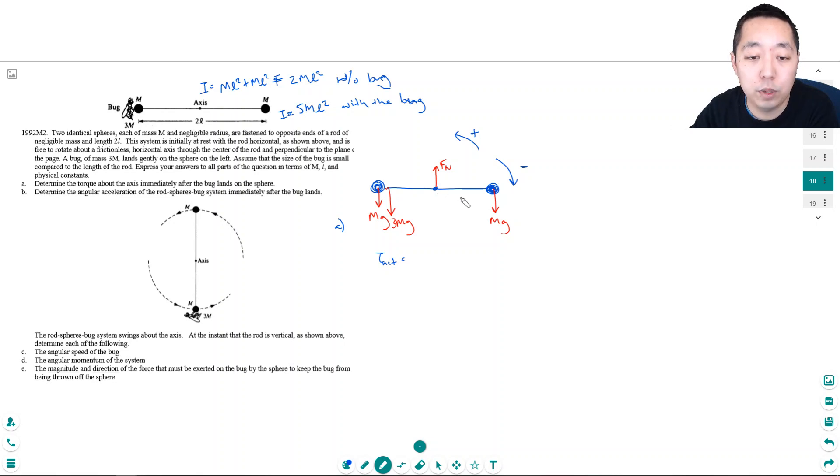This is the point of rotation, this is distance l, this is distance l. This mg is causing it to rotate clockwise—this force downward is going to try to pull the rod to rotate clockwise—so that's going to be a negative torque: negative mg times l, because the r vector is already perpendicular to the force vector.